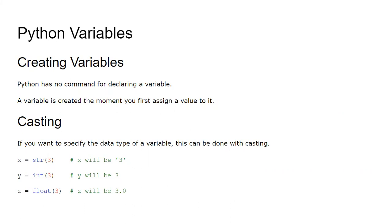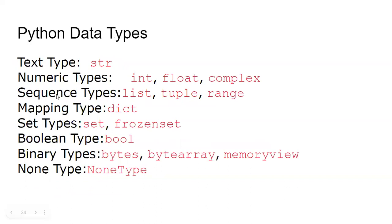You can specify the data type of a variable using casting. For example, x as string written in single quotes, y as integer, and z as float. Python data types include: text type (string), numeric types (int, float, complex), sequence types (list, tuple, range), mapping type (dictionary), set types (set, frozenset), boolean type (bool), binary types (bytes, bytearray, memoryview), and None type.